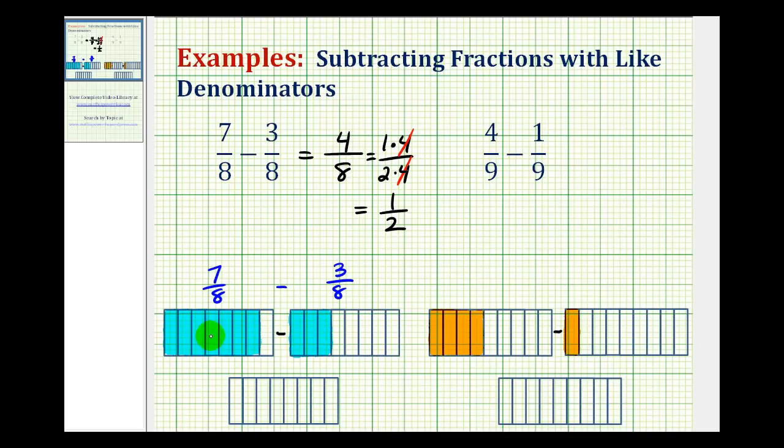So if we have 7 pieces and subtract 3 pieces, that will leave us with 4 pieces, where each piece represents 1 eighth, leaving us with a difference of 4 eighths modeled here.